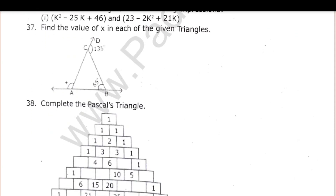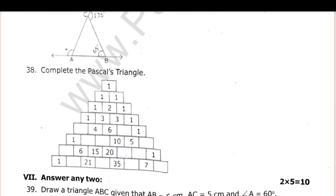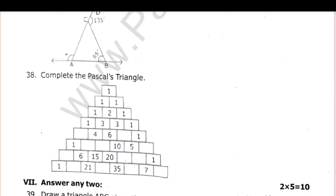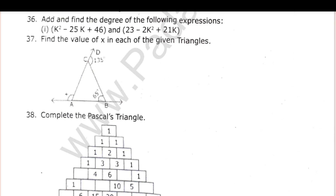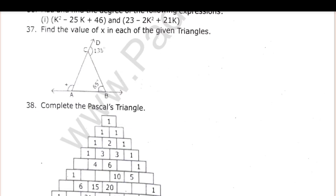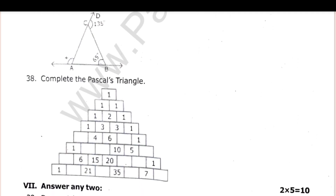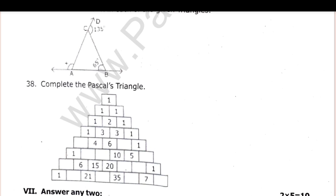Next row is the answer — 2 powers, 5 marks, 5 marks. Draw a triangle ABC, given that AB equal to 6 cm, AC equal to 5 cm, and angle A equal to 60 degrees. Draw an equilateral triangle of side 7.5 cm. Draw a triangle PQR given that angle P equal to 115 degrees, angle Q equal to 40 degrees, and PQ equal to 6 cm.